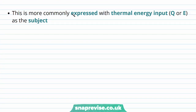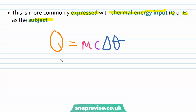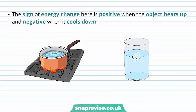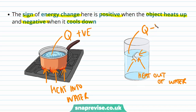The equation is more commonly expressed with thermal energy input Q or E as the subject: Q equals mass M times specific heat capacity C times delta theta. You might also see it as E equals MC times delta theta. The sign of energy change is positive when the object heats up and negative when it cools down. So when putting heat into water, Q is positive; when taking heat out, such as an ice cube melting in the water, Q for the water is negative.